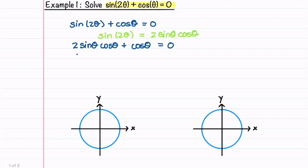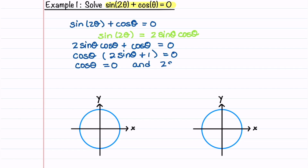We can pull out a cosine θ, and this gives cosine θ times the quantity 2 sine θ plus 1 is equal to 0. We can break this down into two equations: cosine θ is equal to 0, and 2 sine θ plus 1 is equal to 0. The second equation becomes sine θ is equal to minus 1 half.